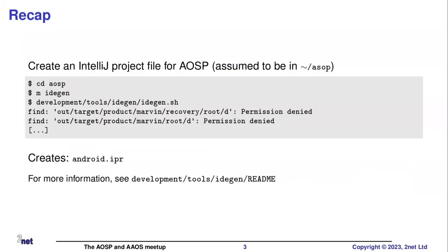Just a quick recap: the idea is that you have AOSP, which is a huge code base. You might like to browse it using a graphical environment such as Android Studio. This is possible. You just run these commands — idgen — and that generates a script for you. Then you run the script. Eventually, this generates a project file, an Android.ipr file. More details are in the readme file.